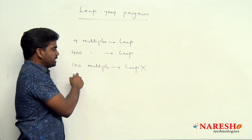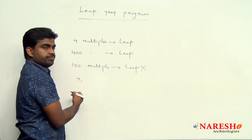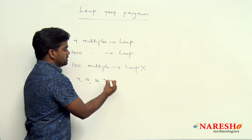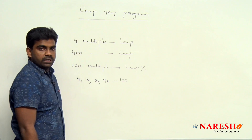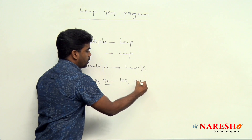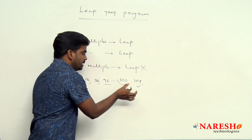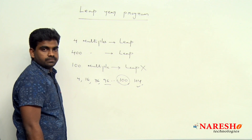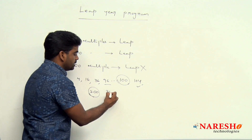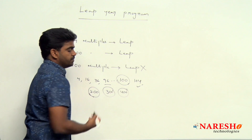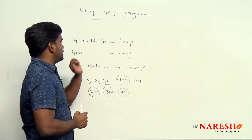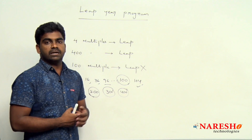Now, 100 is also a multiple of 4 — for example, 4, 16, 36, 96, and so on — 100 is also a multiple of 4. But 96 is a leap year and 104 is a leap year, while 100 is not a leap year. Similarly, 200 is not a leap year, 300 is not a leap year, but 400 is a leap year. All multiples of 400 are leap years, and multiples of 4 are leap years, but not multiples of 100.